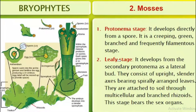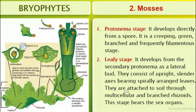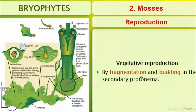The leafy stage develops from the secondary protonema as a lateral bud. They consist of upright, slender axes bearing spirally arranged leaves, attached to the soil through multicellular and branched rhizoids. This leafy stage bears the sex organs — both male and female sex organs.